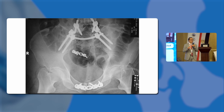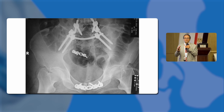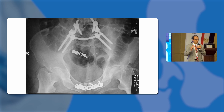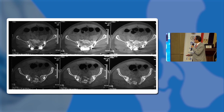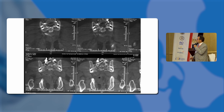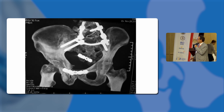Anterior fixation is essential — if you do not fix anterior, expect failure of your construct. There are many cases that failed because they lacked anterior fixation. Post-operative AP, inlet view, CT, and 3D reconstruction all confirm the reduction. We cannot control the anterior part of the sacrum and do not go there, but the overall reduction is confirmed on post-operative imaging.